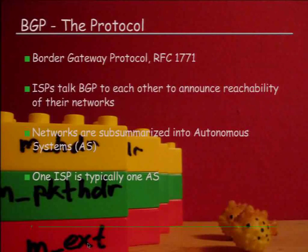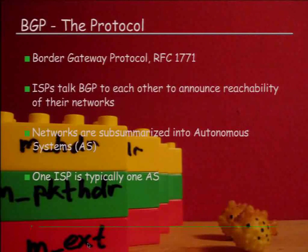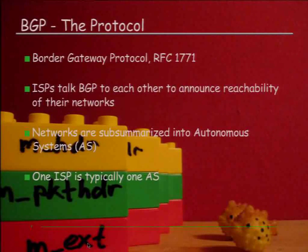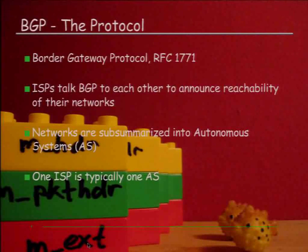The Border Gateway Protocol, BGP, is defined in an RFC which only has two major bugs — not the protocol, the RFC. BGP is used between ISPs to inform each other which networks are reachable through them, so everybody tells his neighbor: if you want to reach 10/8, send it my way. They announce it on to their peers, upstreams, downstreams. Since that would not scale by announcing all networks individually, they're summarized into autonomous systems, and typically one ISP is one AS. Some big ones are more than one, but this is typically the result of mergers.